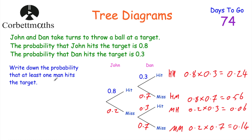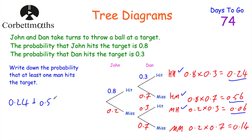The last part asks for the probability that at least one man hits the target. At least one man hitting would include: hit-hit (0.24), hit-miss (0.56), and miss-hit (0.06). Miss-miss doesn't count because neither man hits. So we add: 0.24 + 0.56 + 0.06 = 0.86. The probability that at least one man hits the target is 0.86.